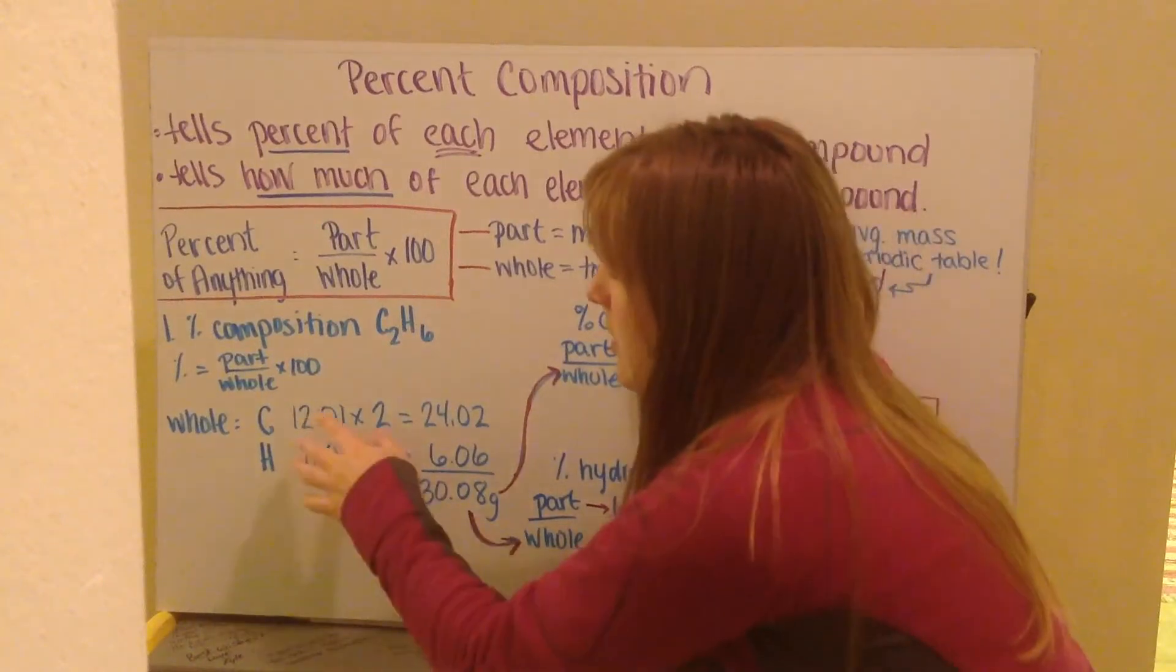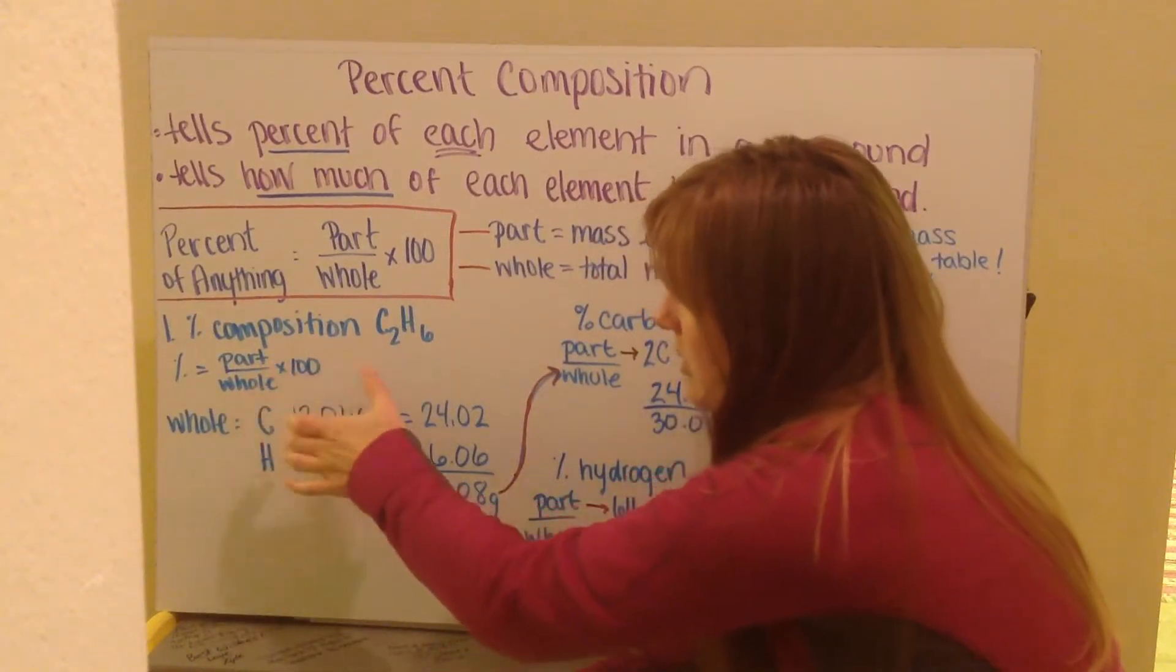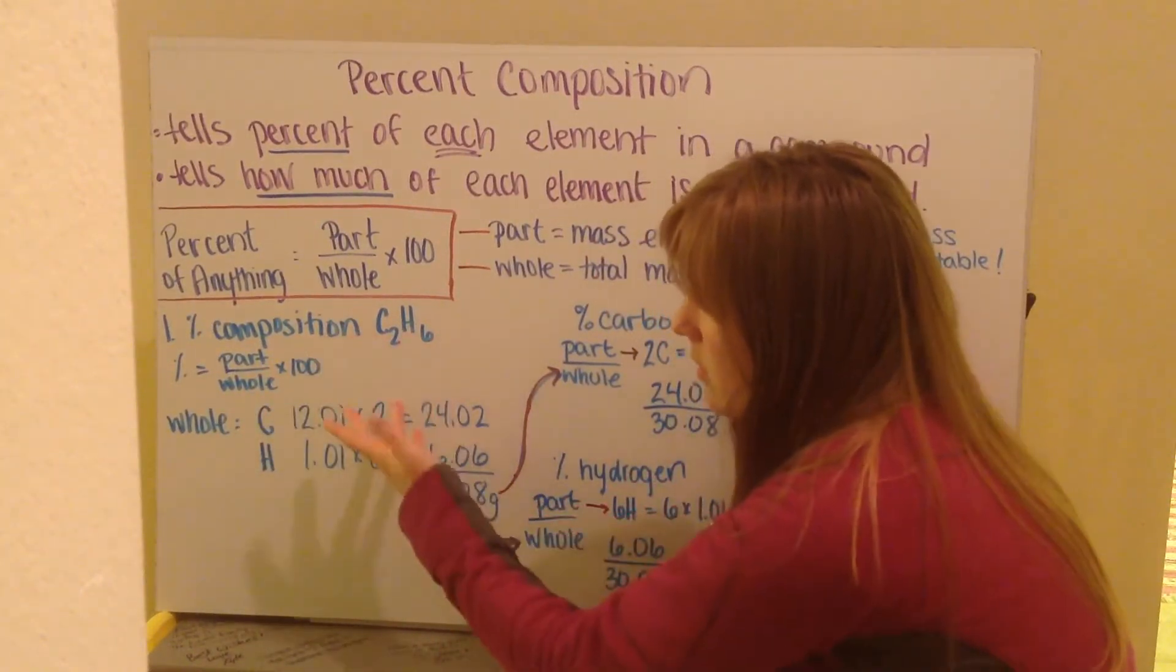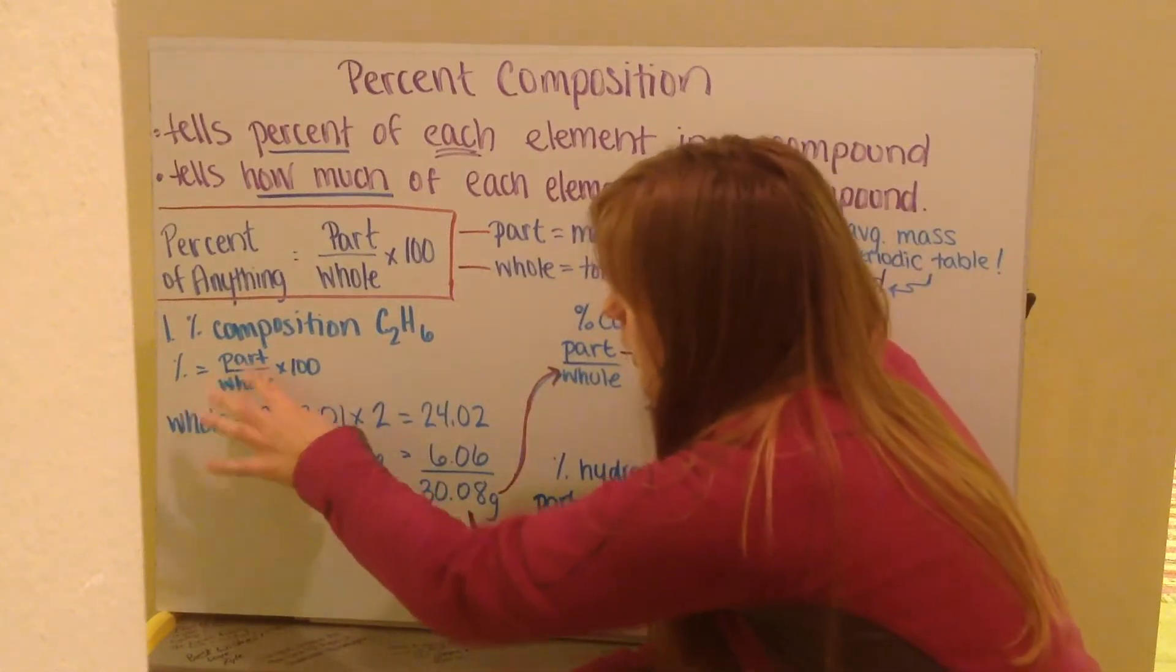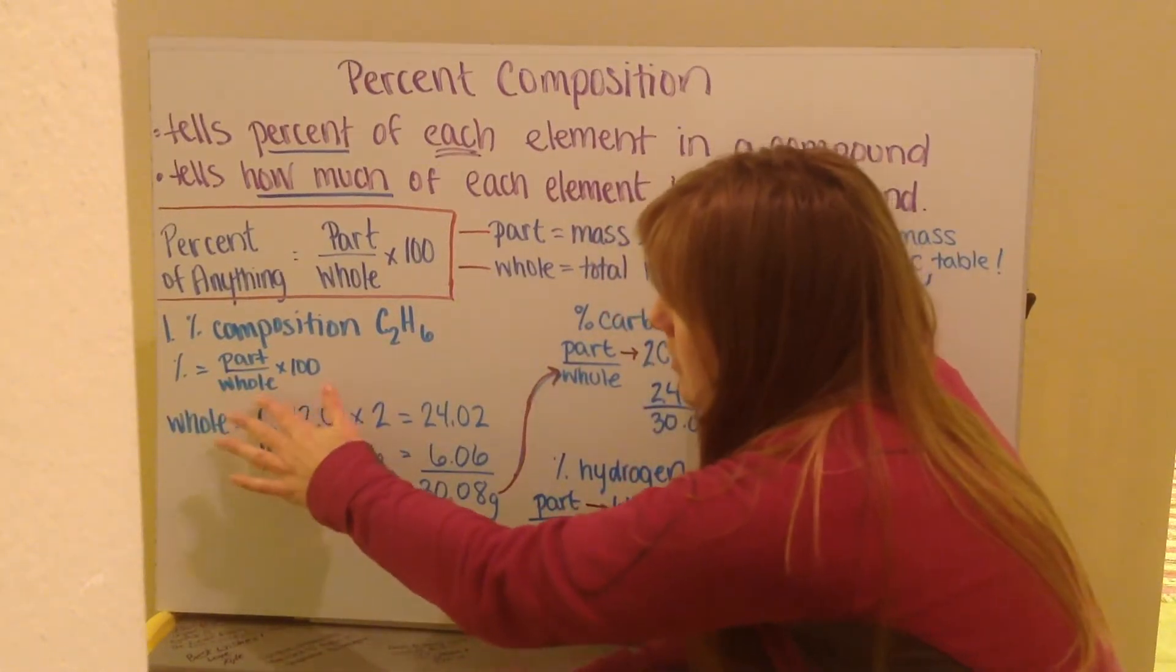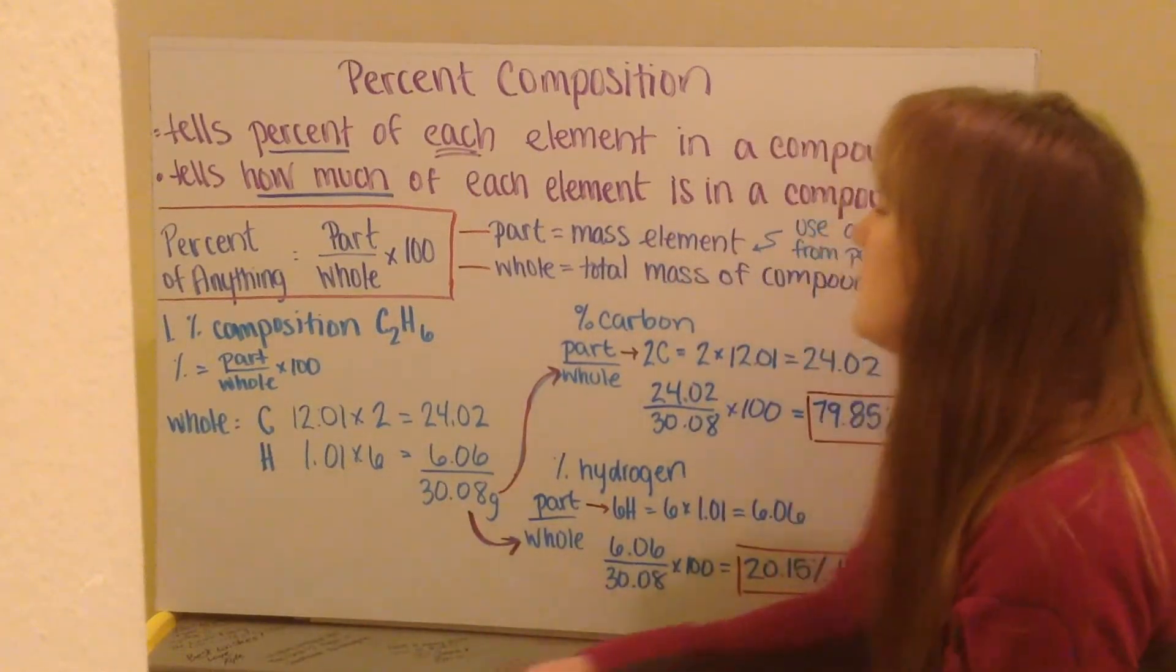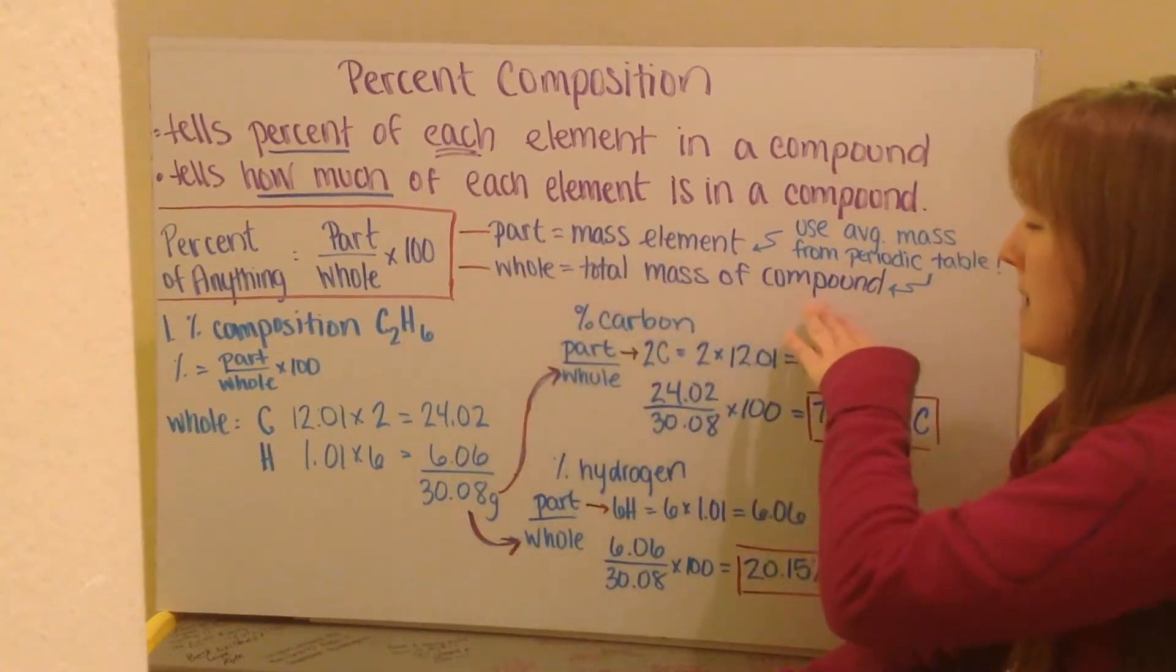My first step is to figure out what equation I'm going to use. It's a percent question, so I use my percent equation of part over whole times 100. I first need to determine what the whole is, my whole value.